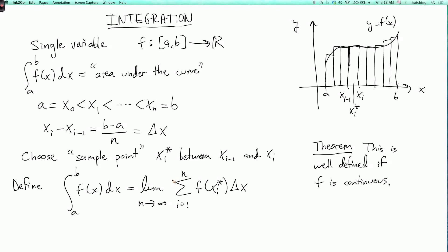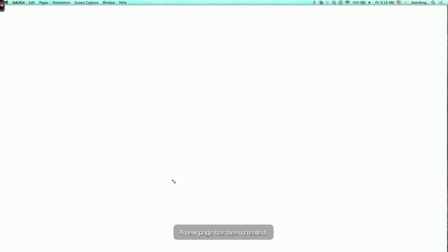Now, let's generalize this to functions of two variables. So now the setup is the following. We replace the interval with a rectangle. So R will be the interval [a,b] Cartesian product with the interval [c,d]. I'm not sure if you've seen this notation before.